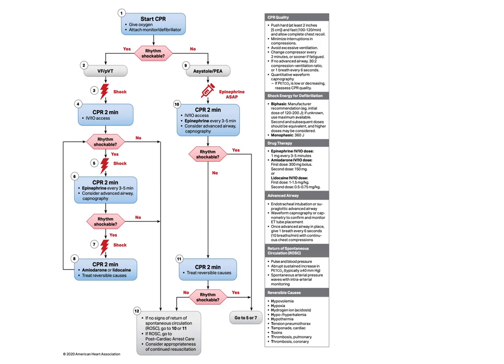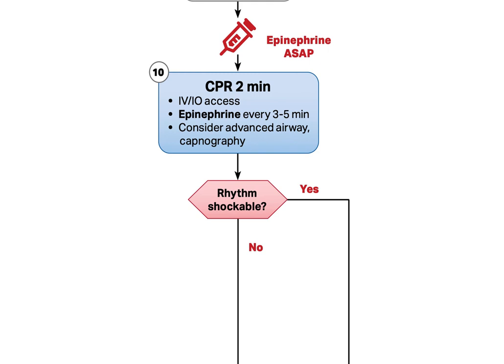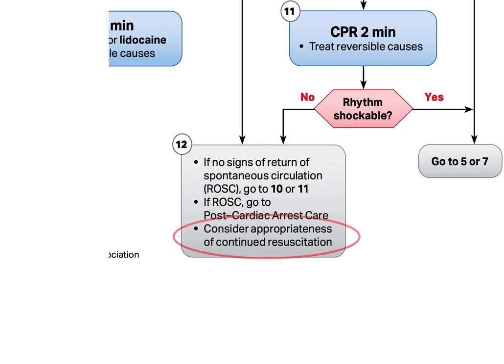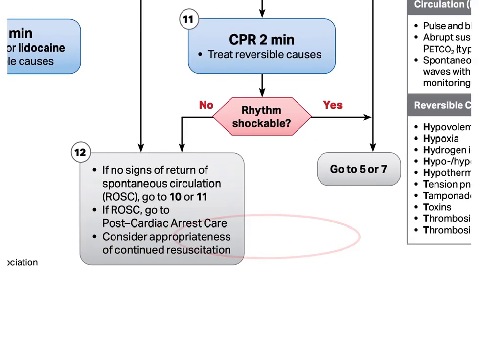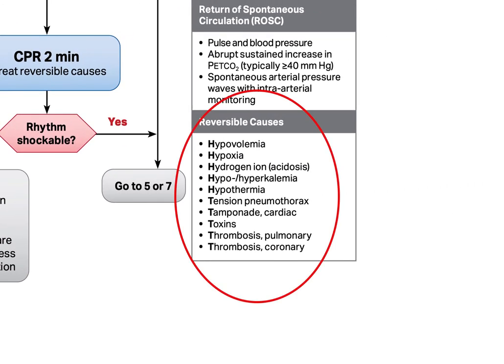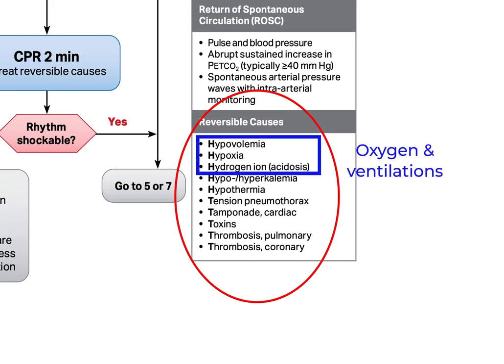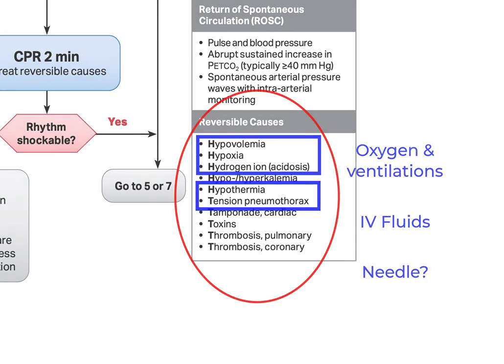Here's the rapid-fire summary for the non-shockable rhythms. Do good CPR, start an IV, and give epinephrine as early as possible. Do two-minute cycles of CPR and repeat your epinephrine every three to five minutes. If it's asystole, think about terminating resuscitation. If it's PEA, find a cause and treat the one you can. Oxygenate and ventilate with an advanced airway, administer fluids, assess lung sounds and decompress the chest if needed, and if they're hypothermic, slow down and plan to work it for a while as you warm your patient.